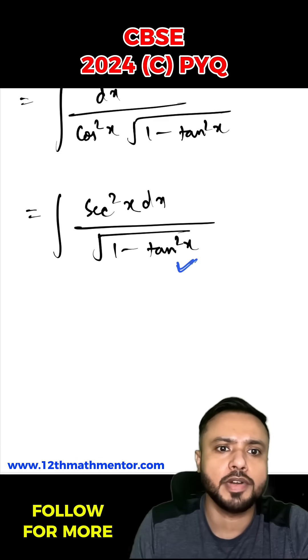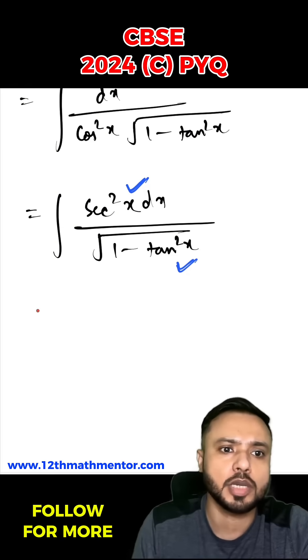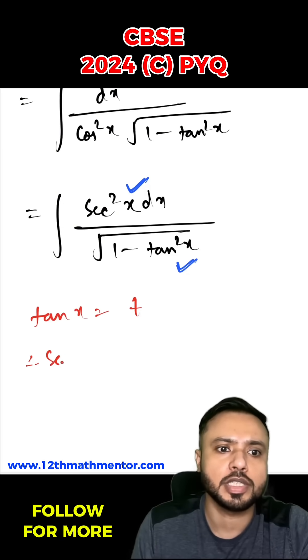Now I can clearly see that the derivative of tan x, which is sec²x, is present in the numerator. So I'm going to use the substitution tan x equals t. Therefore, sec²x dx will equal dt.